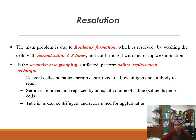The main problem in Group 3 discrepancy is rouleaux formation. Resolution: wash cells with normal saline 6–8 times and confirm with microscopic examination — this is the saline replacement technique. For affected reverse grouping: add reagent cells to patient serum, centrifuge to allow antigen-antibody reaction, remove the serum, replace with equal volumes of normal saline, mix, centrifuge again, and re-examine for agglutination.